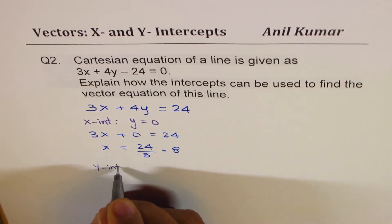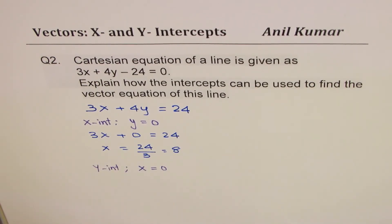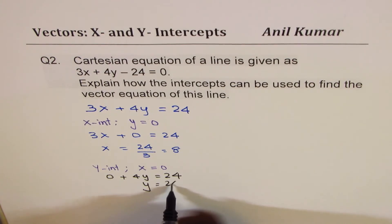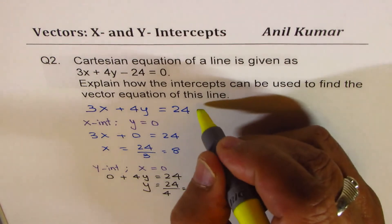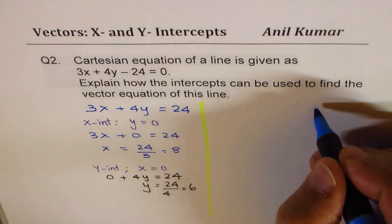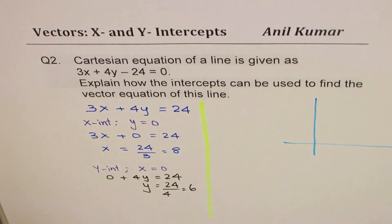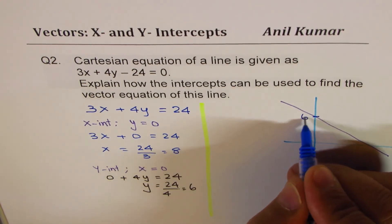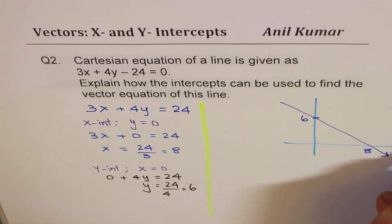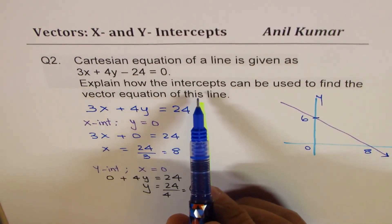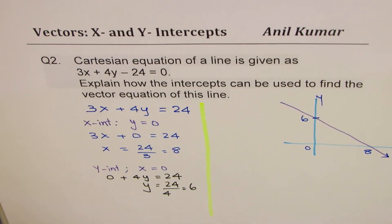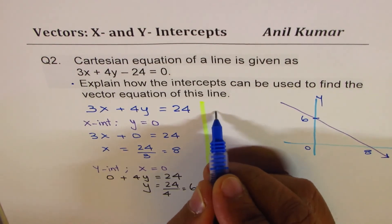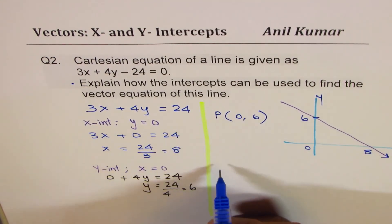For the y-intercept, set x equals to 0: 4y equals 24, so y equals 6. We now have two points on the line: the y-intercept (0, 6) and the x-intercept (8, 0). Both are positive, so the line slants accordingly. To find the vector equation, we need a point and a direction. We'll use point P equal to (0, 6).